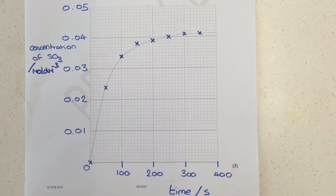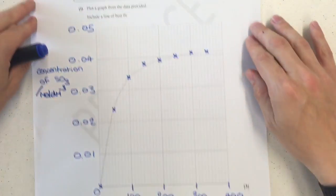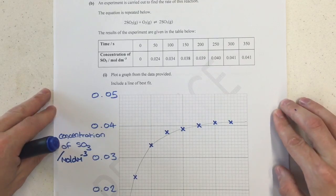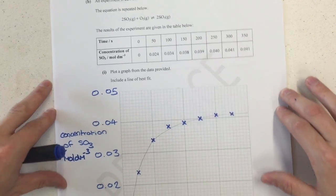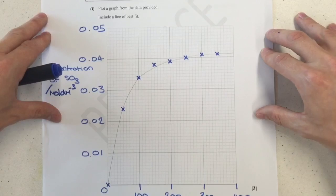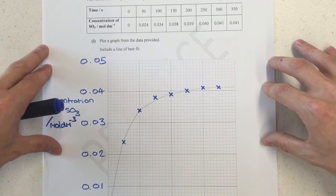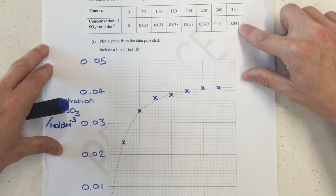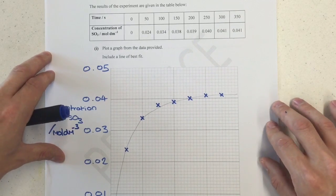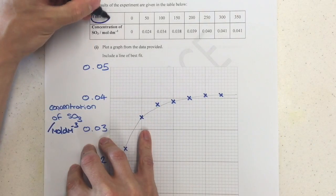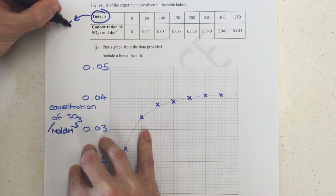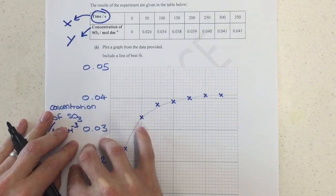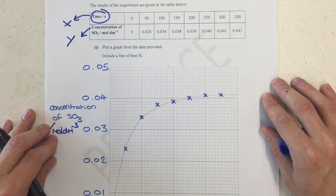So to begin with, a concentration time graph. For the concentration time graph, you can see here I've taken the data that they've given me and I've already plotted the points. I've gone to 400 and 0.05 and translated that into a scale. The most important thing here is where does time go? Consistently time should go on the x-axis and concentration should go on the y-axis and you have to be really careful with that.